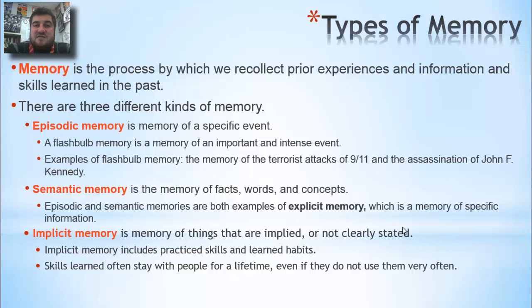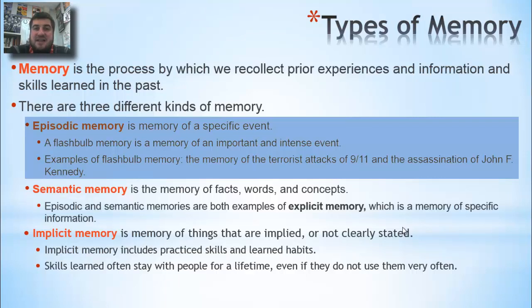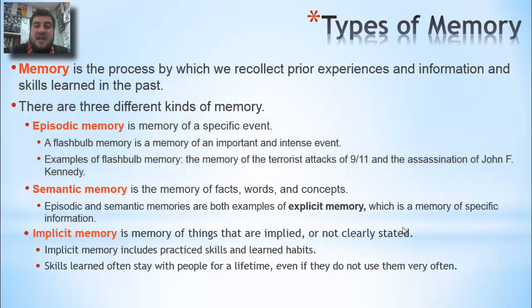First, in the kinds of memory, there's episodic memory — a memory of a specific event, just like a television episode. A specific type of episodic memory is a flashbulb memory, like a flash on a camera. It's an important and intense event. A lot of older adults remember where they were when Kennedy was shot, and everyone remembers where they were during the 9/11 terrorist attacks.